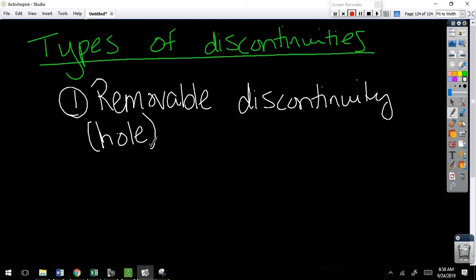And this is a real fancy way of saying that your graph has a hole in it. So maybe I have this line, and right in the middle of my line there's a hole. That is a removable discontinuity. Now, your calculator is not always going to show this.